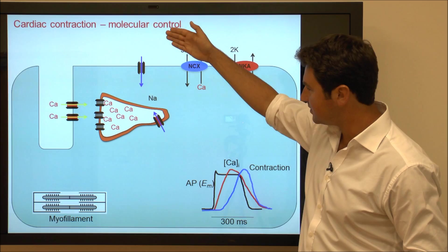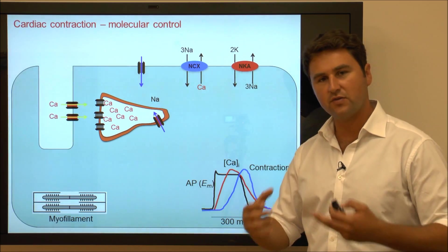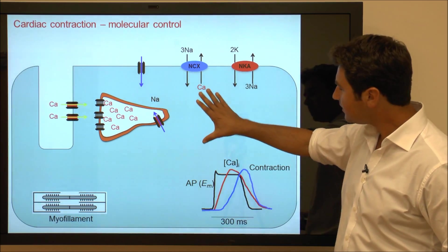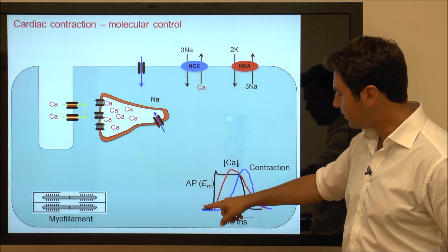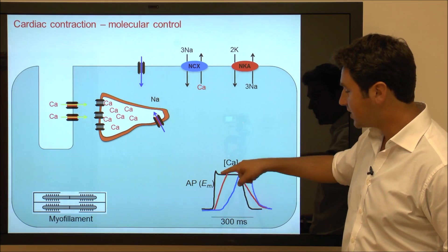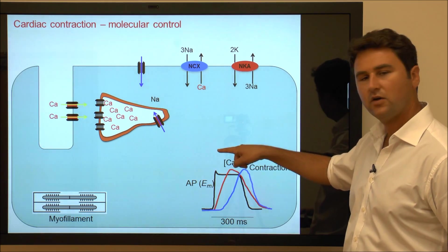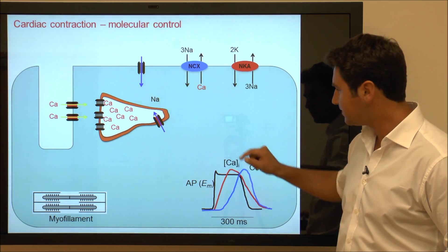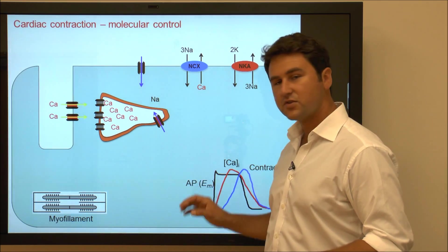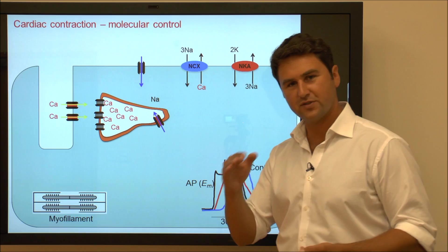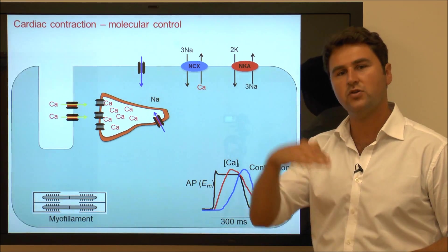But then the sodium channels get activated and a huge amount of sodium floods the cell. The membrane potential will shoot up from minus 70 to plus 25 millivolts. This is called depolarization, in other words movement from negative charge to positive charge.